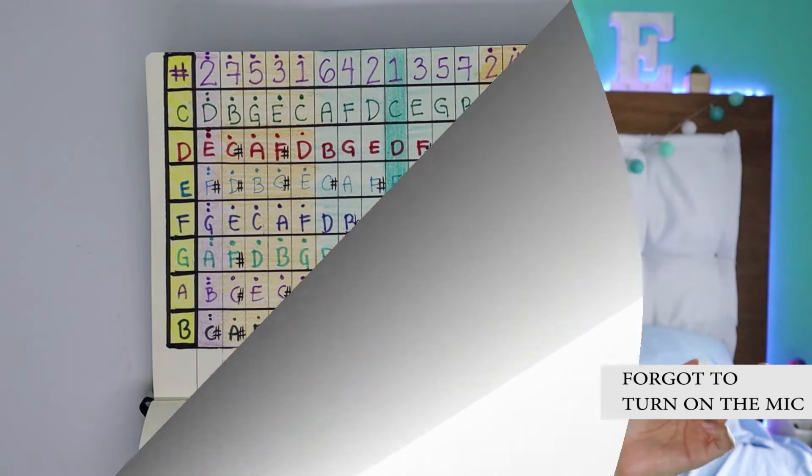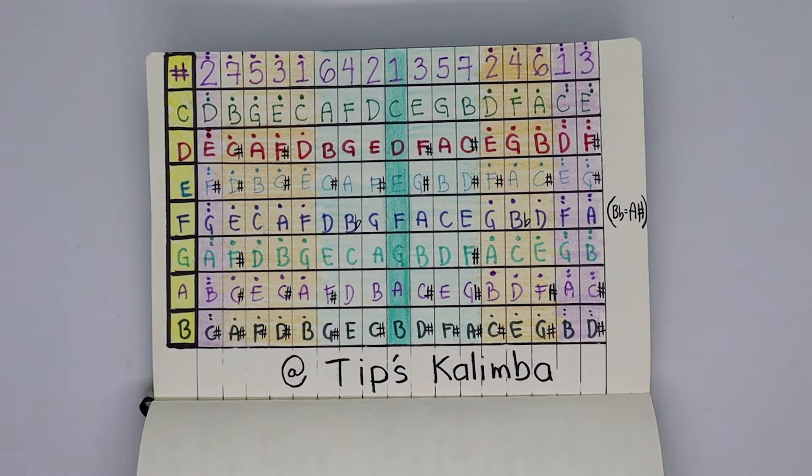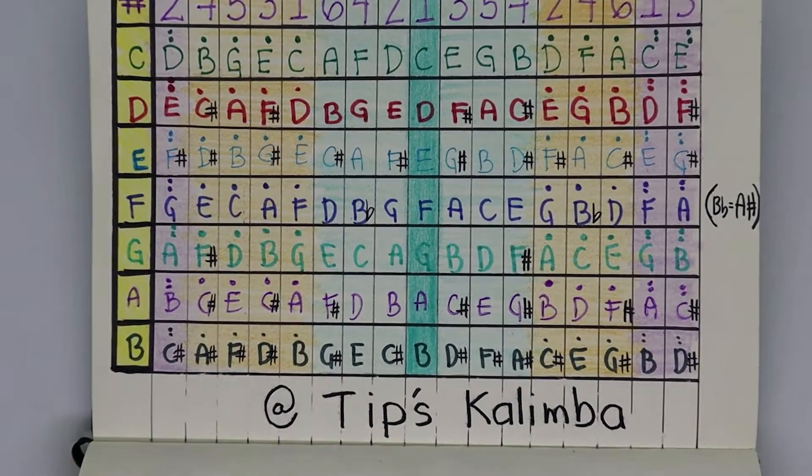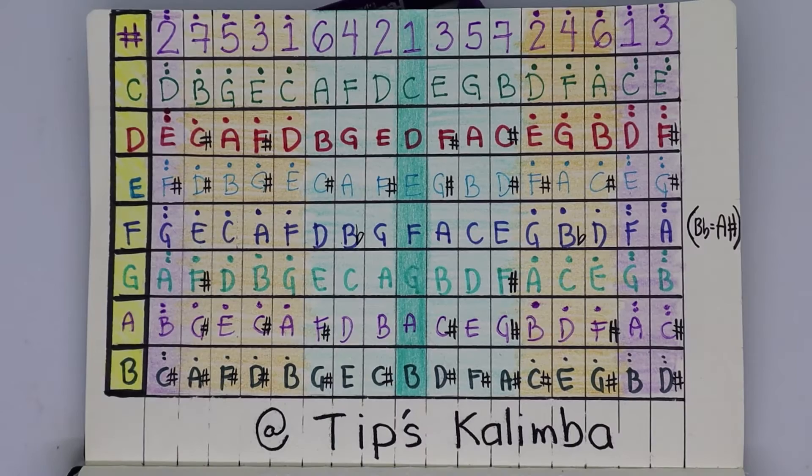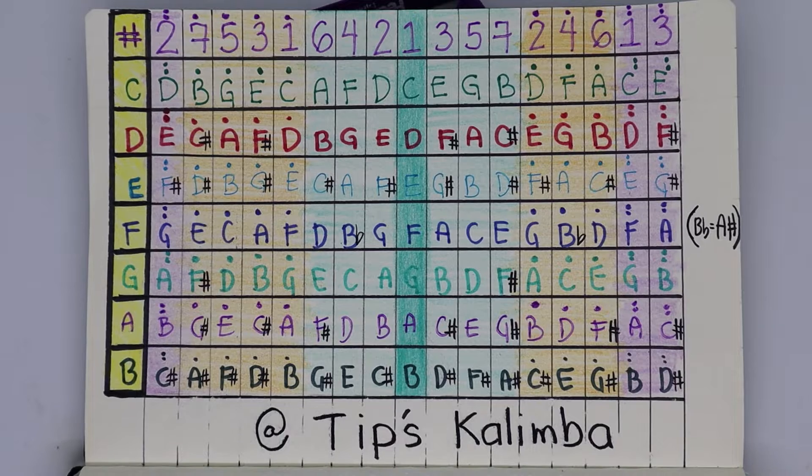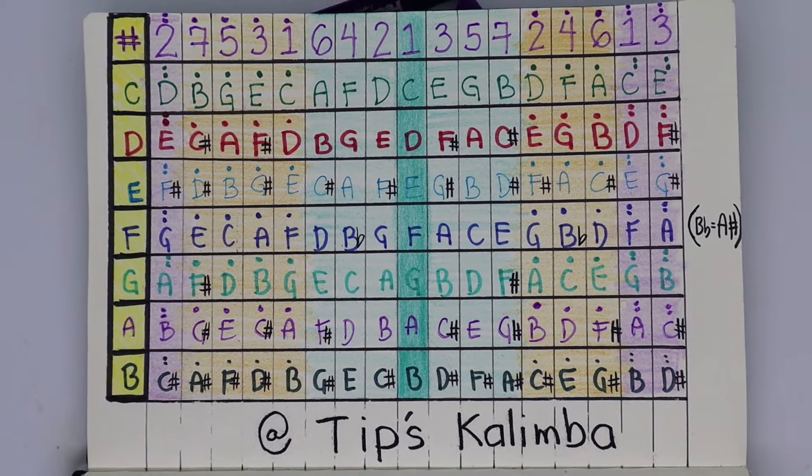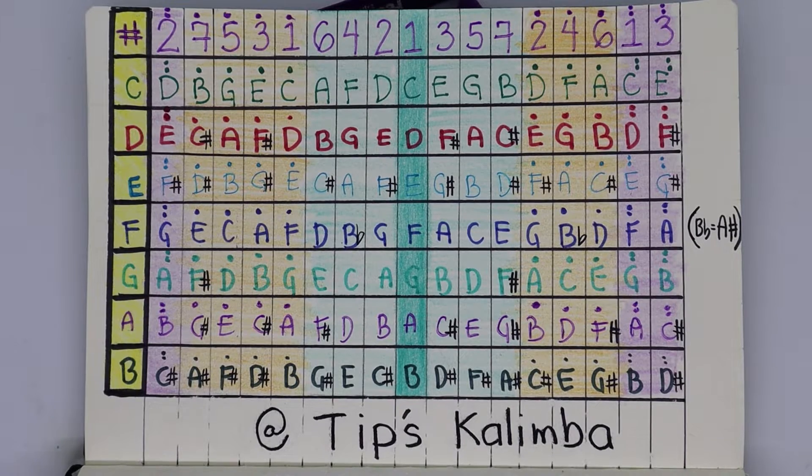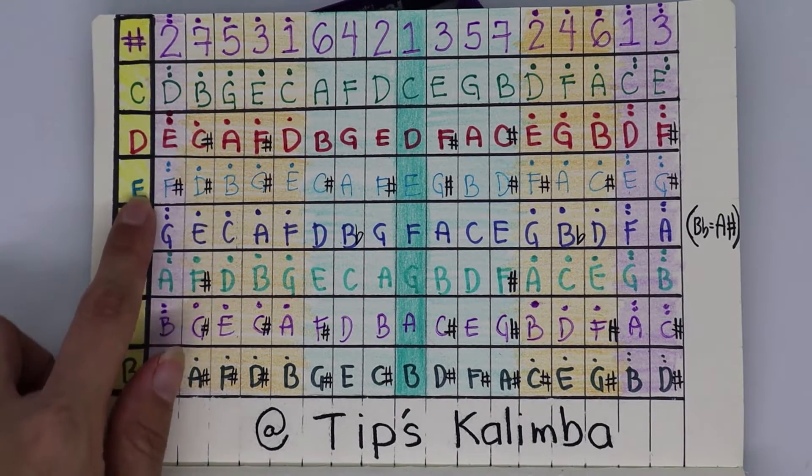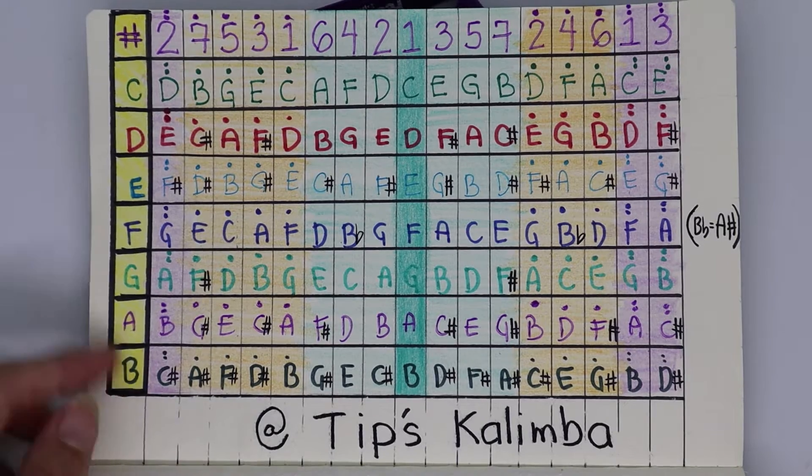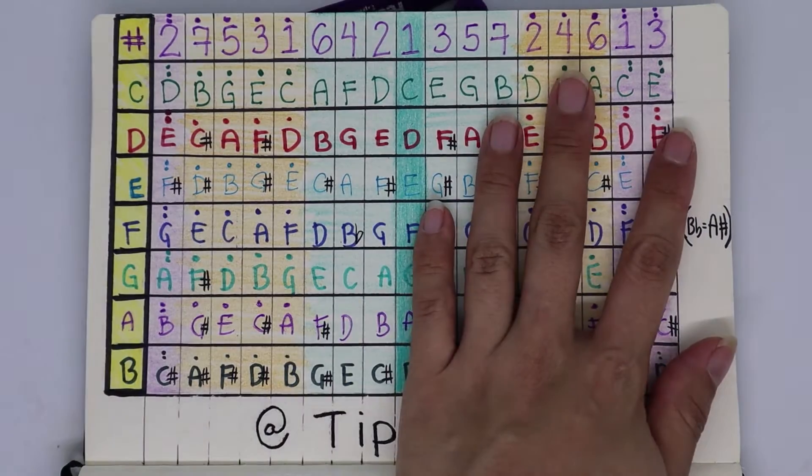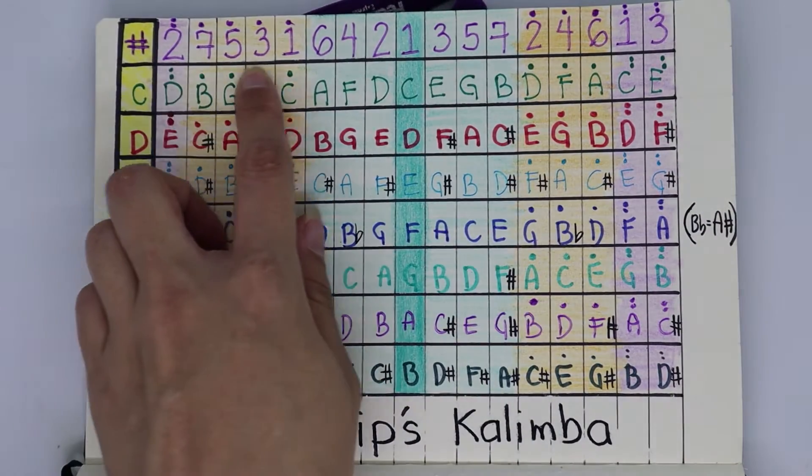This is basically all you need to know if you're gonna change the tuning of your kalimba. Let's zoom it in. You can screenshot this, print it out, or maybe you can also create one of your very own version of it. But if you're gonna see here on the sides, this is the letters or the numbers that corresponds to your kalimba.